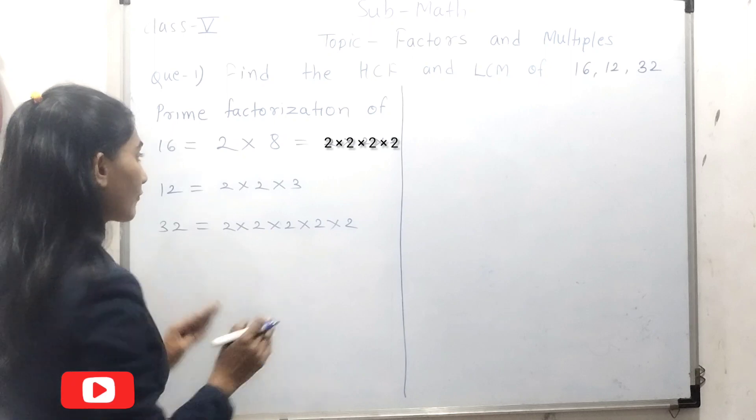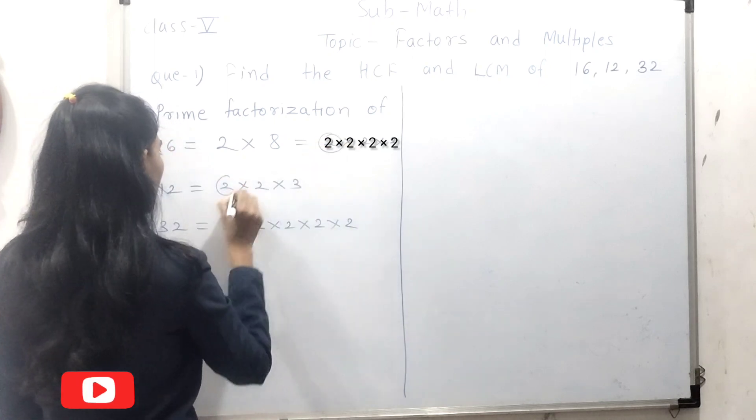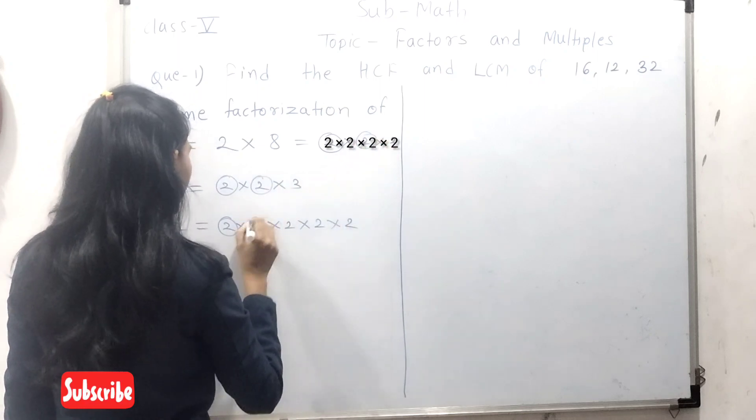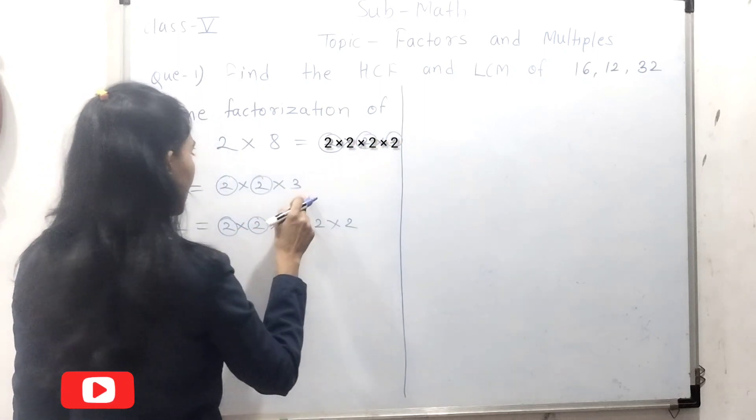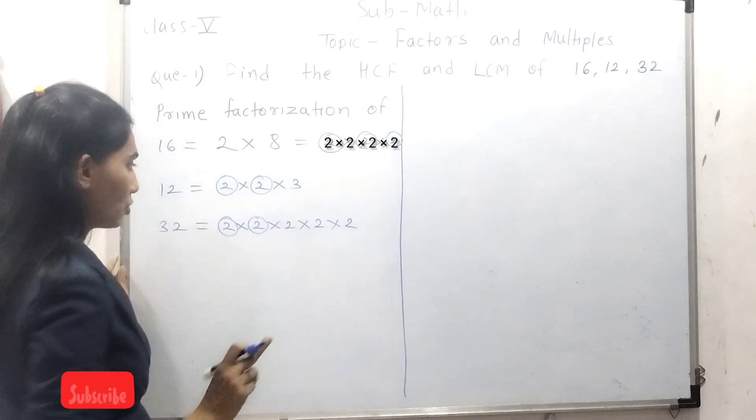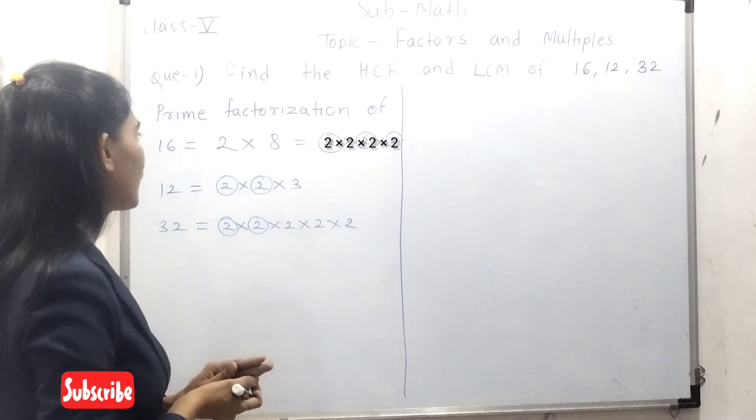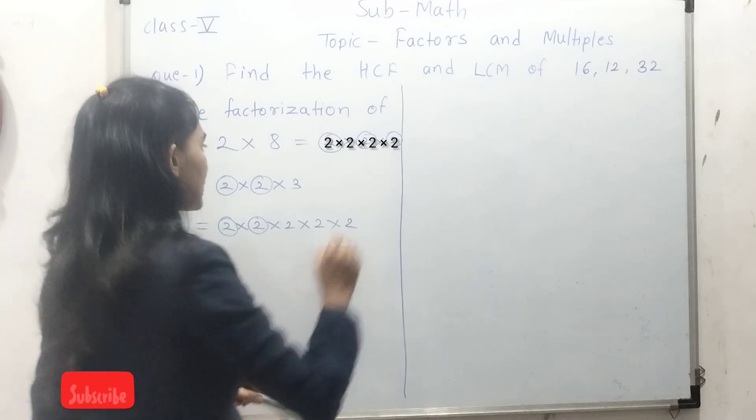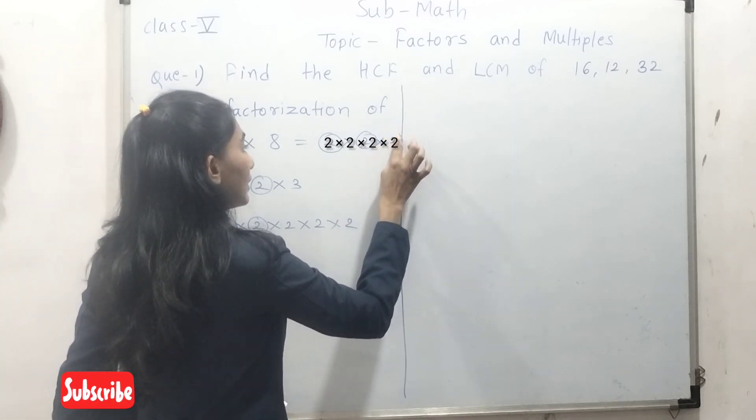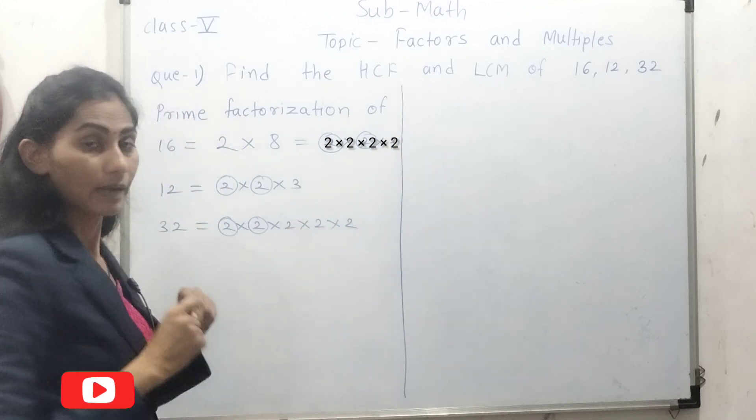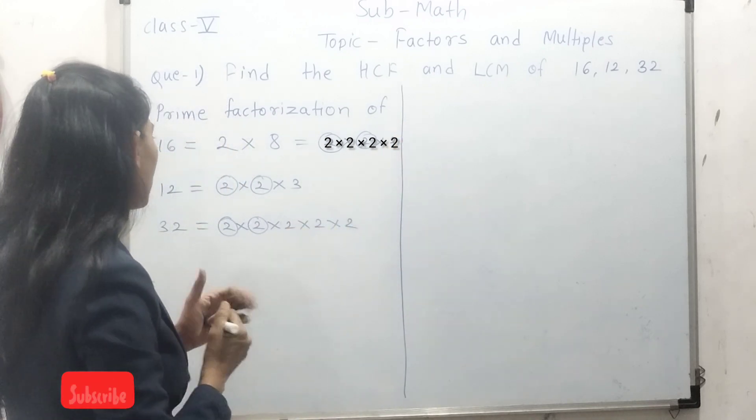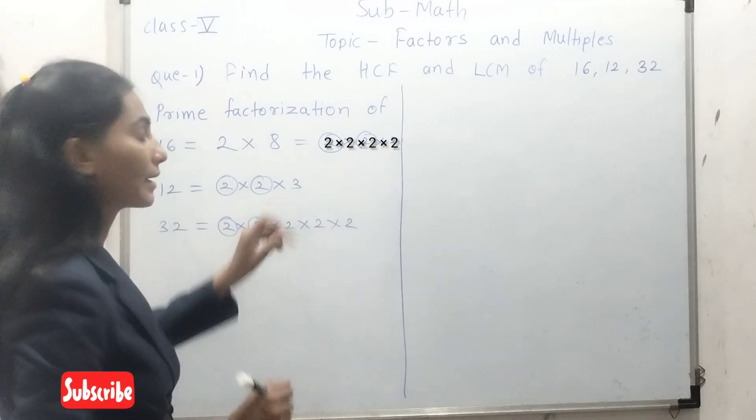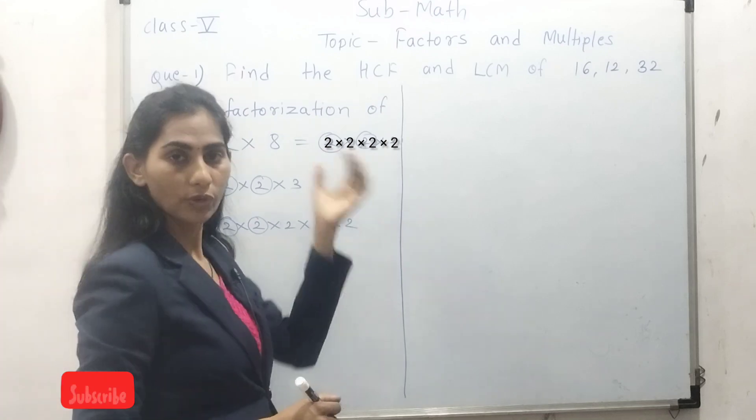Now, you need to circle the common factors. 2 is the first common factor. Then next 2. Again here, one more 2 is there, but here is not one more 2. So we cannot take because if we are finding HCF, we need to circle only those prime factors that will be in all three given numbers. Here, 2 is here and here, but here is not. That's why we cannot take one more 2 here.